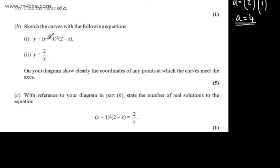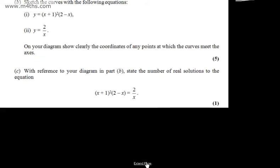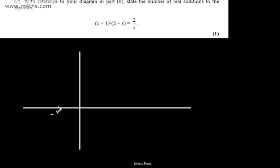Starting with the cubic equation, we've got a repeated root at negative 1 — hence the squared term — and a root at 2, and this is going to be a negative cubic. So we draw on the same set of axes: the repeated root at negative 1 comma 0, and a single root at 2 comma 0.